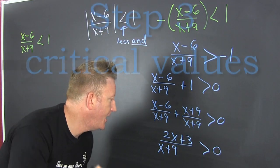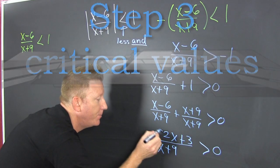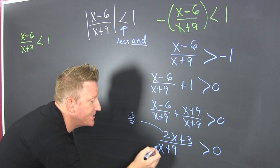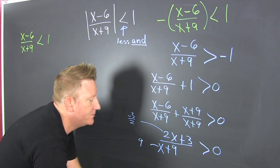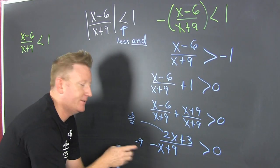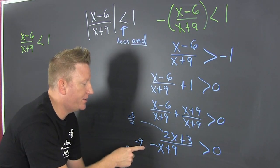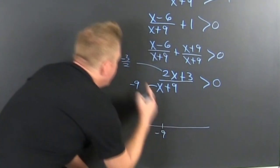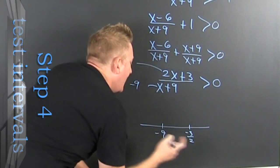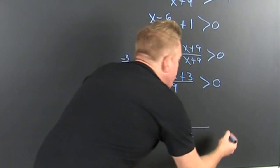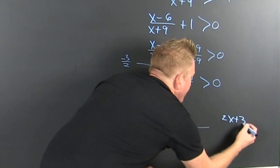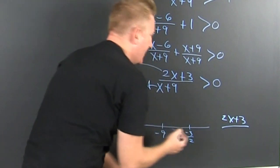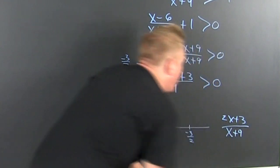We need to find the zeros of the numerator and the zeros of the denominator. What makes 2x plus 3 equal zero? That's x equals negative three-halves. And what makes x plus 9 equal zero? That's x equals negative 9. These go on a number line — the leftmost is negative 9, the rightmost is negative three-halves. We're checking the sign of (2x plus 3) divided by (x plus 9).